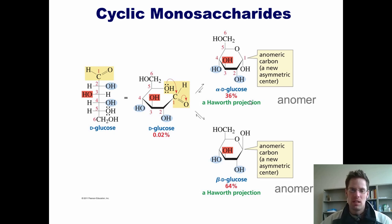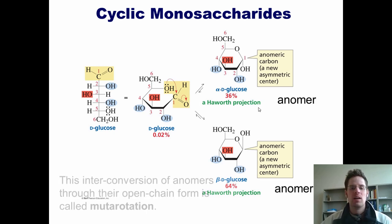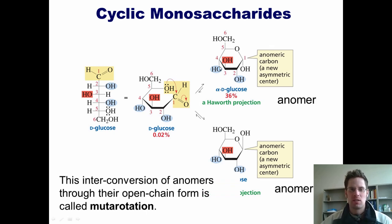This entire process of interconverting between the two ringed forms and the straight chain form is called mutarotation.